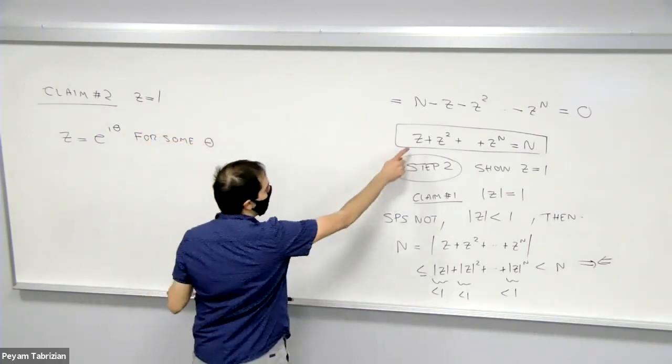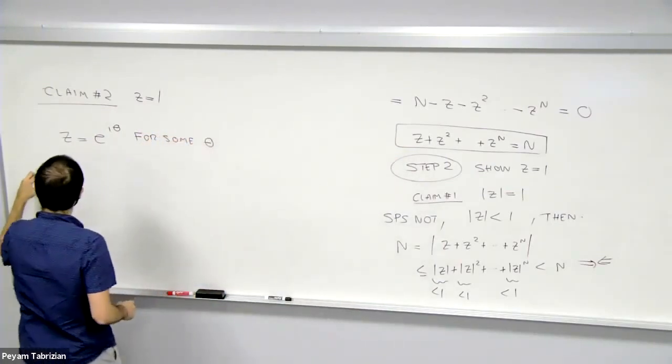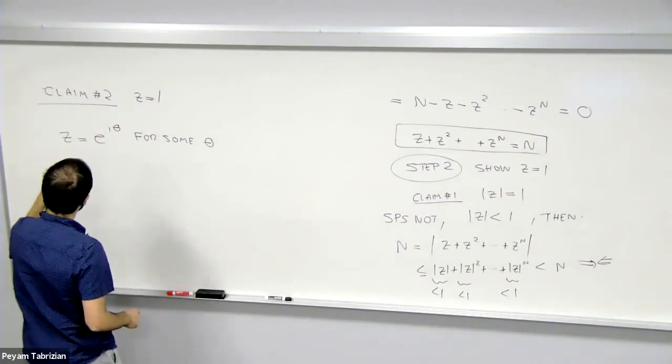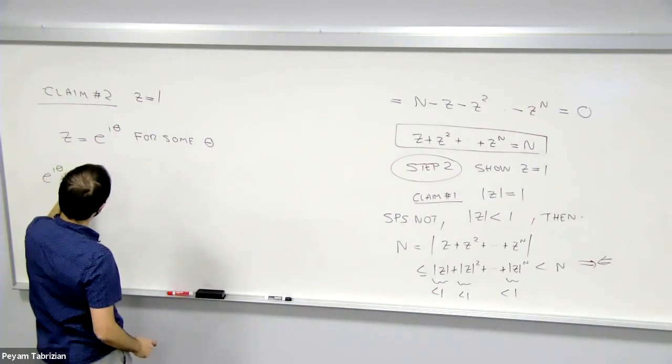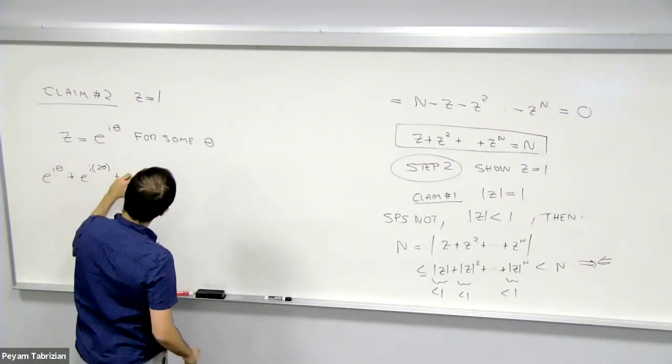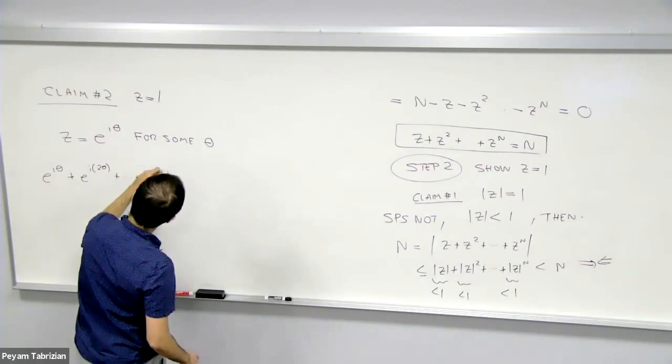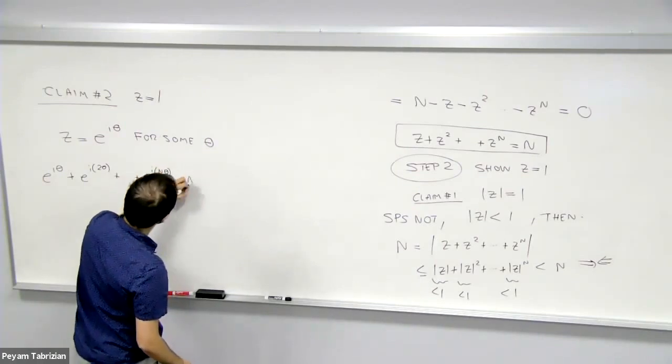And then what this equation becomes, it is e^(iθ) + e^(i2θ) up to e^(inθ). And we know this is n.